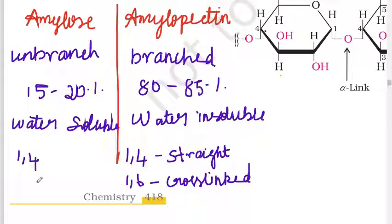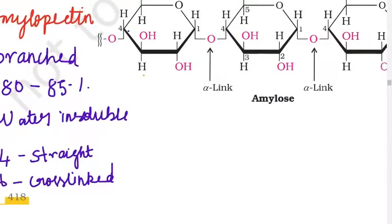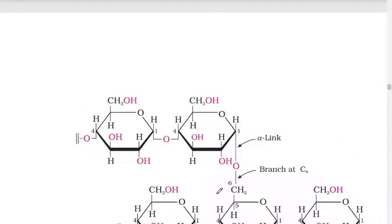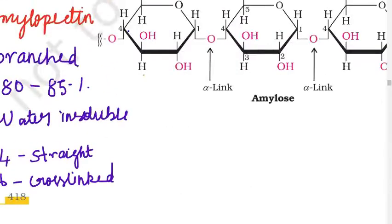In amylose, there is a 1,4 glycosidic bond forming a straight chain. In amylopectin, there is a 1,4 glycosidic linkage along the main chain and 1,6 glycosidic linkage at the branch points, forming the branched structure.